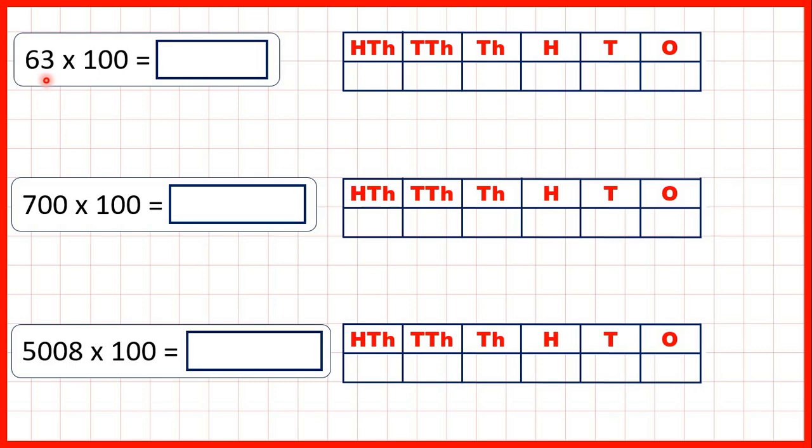Now for these questions, we need to multiply whole numbers by 100, and we can do that just by putting two zeros on the end.